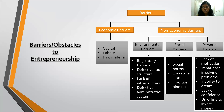The second social barrier is low social status. Compared to professionals and other jobs, entrepreneurs are considered as having a low status. They are considered inferior to office goers, engineers, or doctors. This affects self-esteem and can discourage people from choosing entrepreneurship.